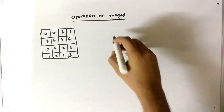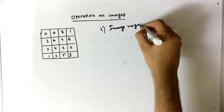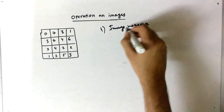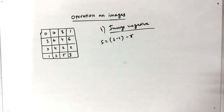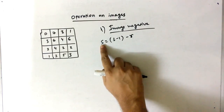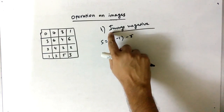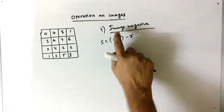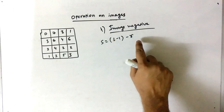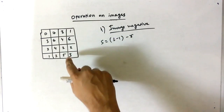The first operation we have to perform is the image negative. The equation for the image negative is S = L - 1 - R. S means the modified image — specifically the image negative result. R means the given image.